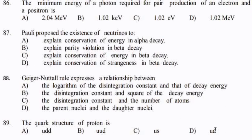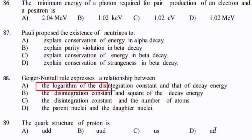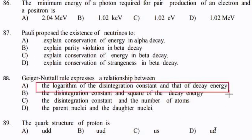Next: the Geiger-Nuttall rule expresses a relation between — option A — the logarithm of the disintegration constant and that of the decay energy.